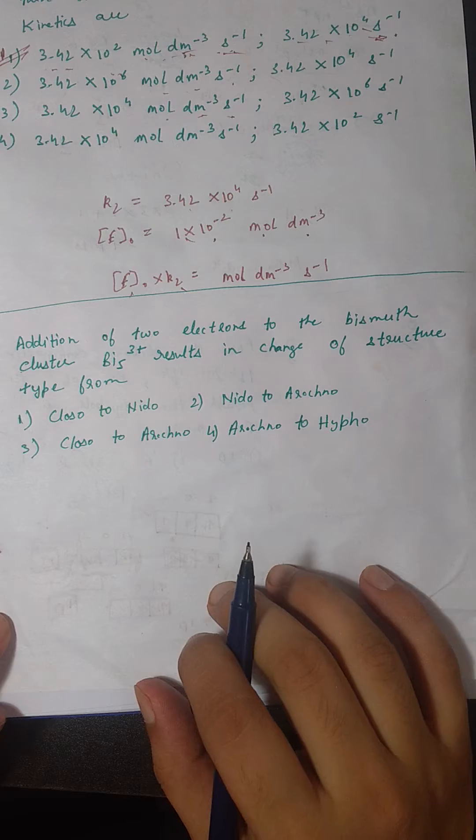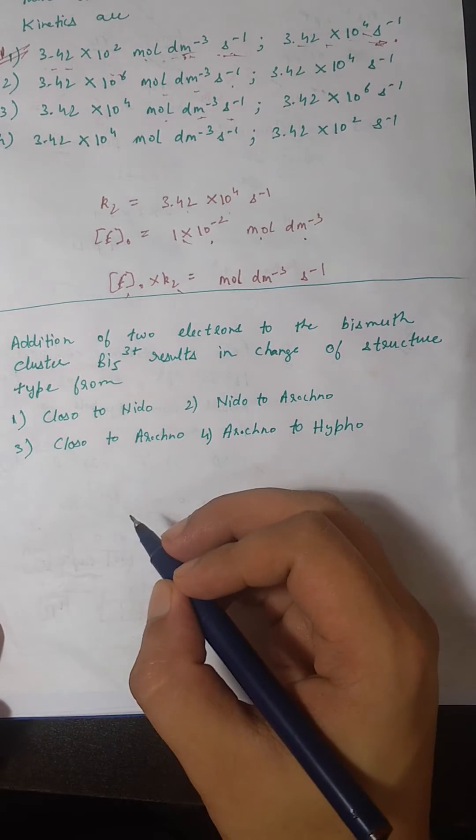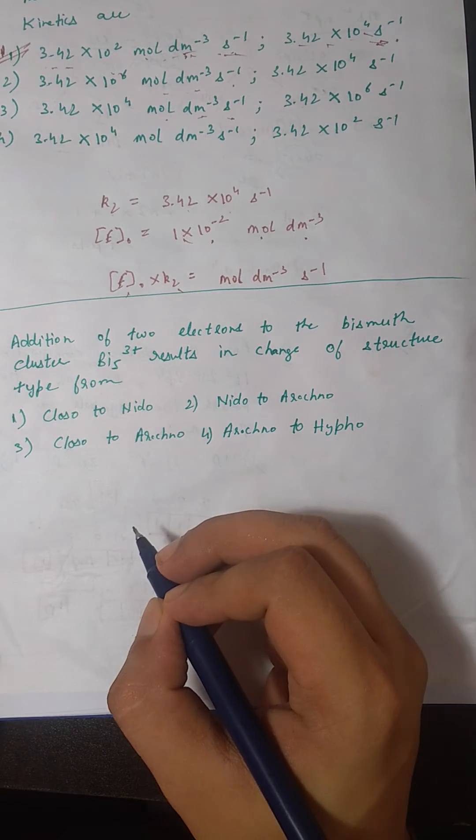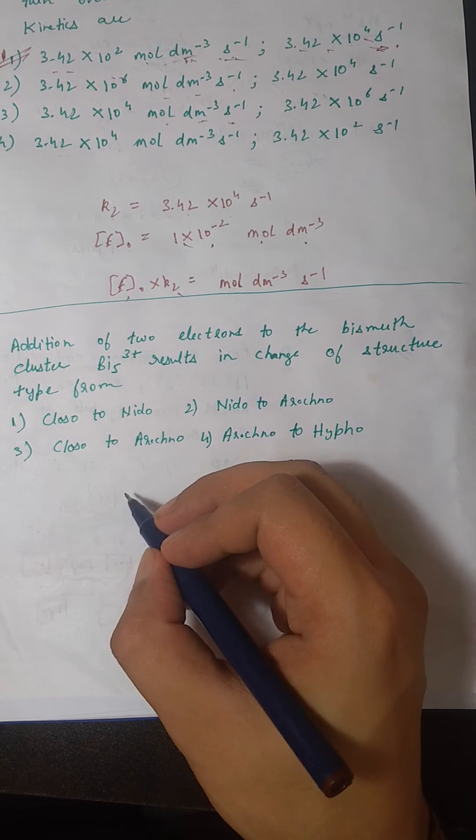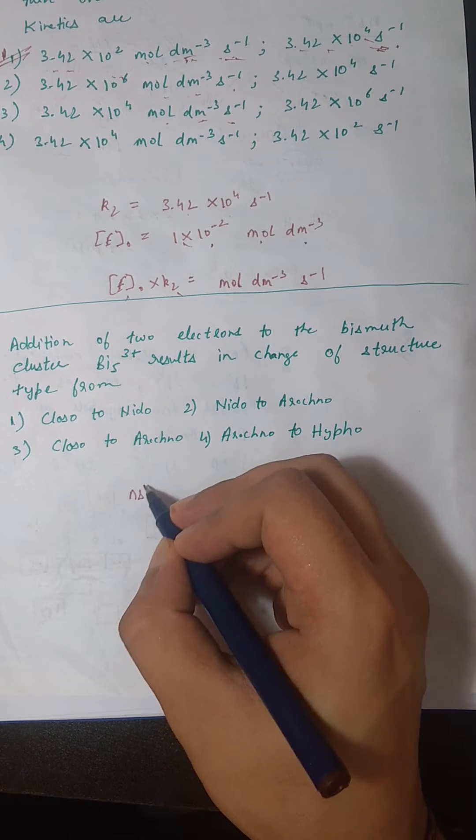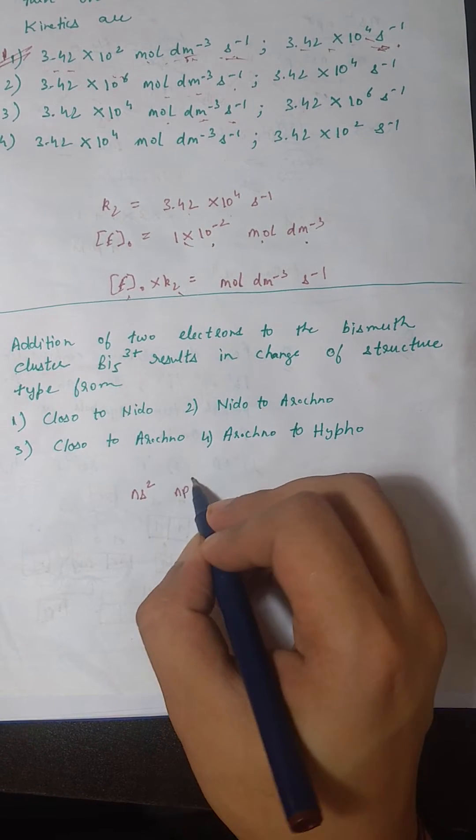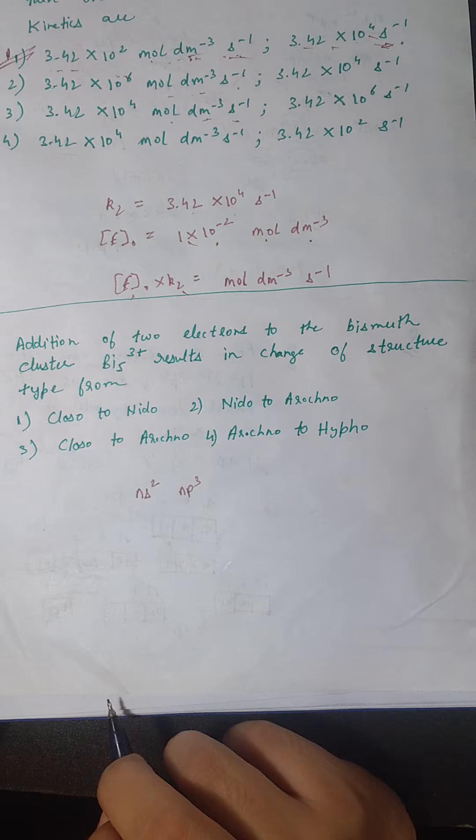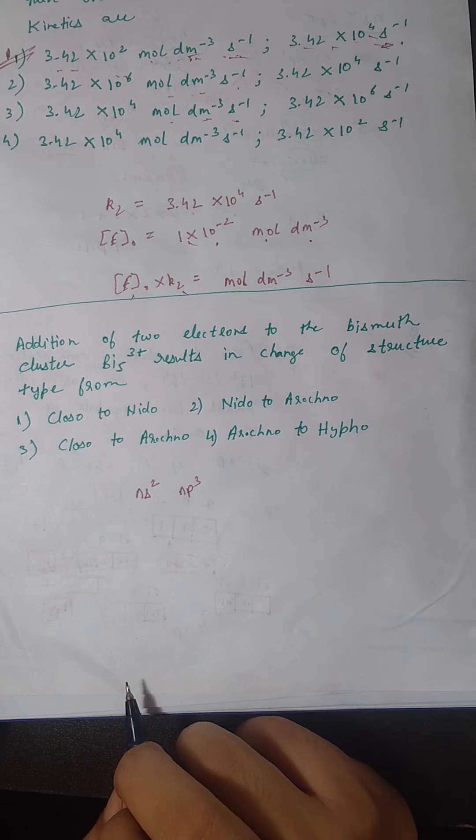Bismuth belongs to the nitrogen group, which is group 5. In group 5 elements, the basic electronic configuration is ns² np³, so the valence electrons equal 5.